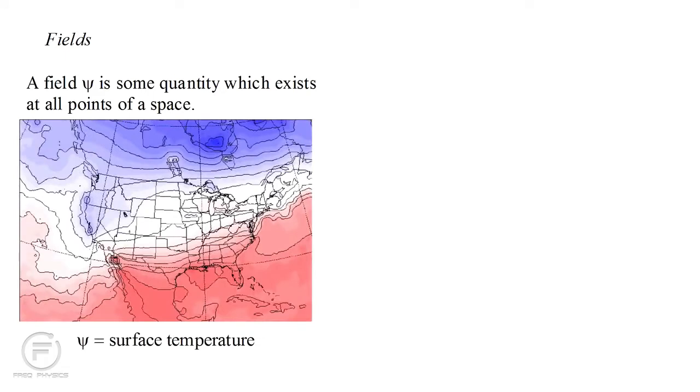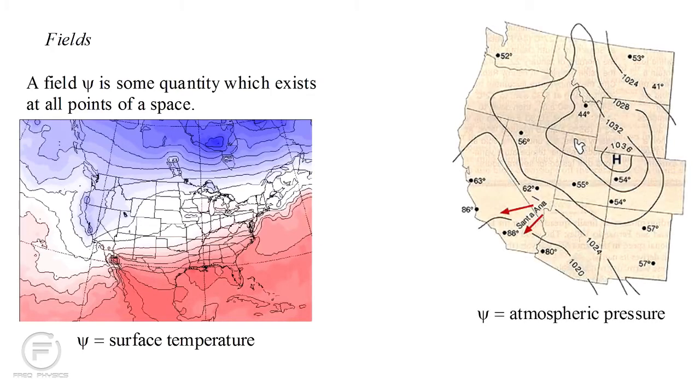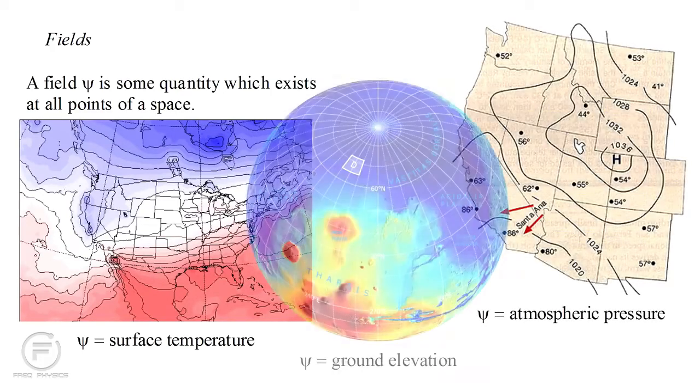An example is the field of Earth's surface temperature. At any point on Earth, this field's value is simply the temperature at that point. Atmospheric pressure defines another field, as does ground elevation.